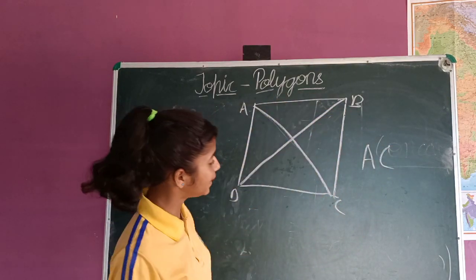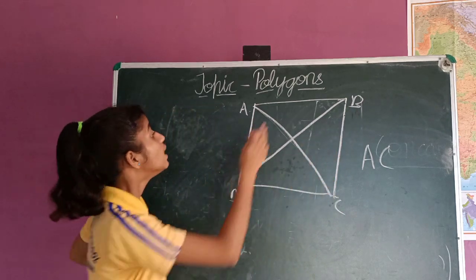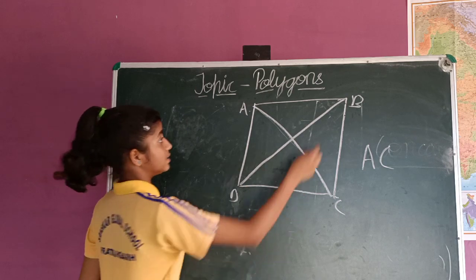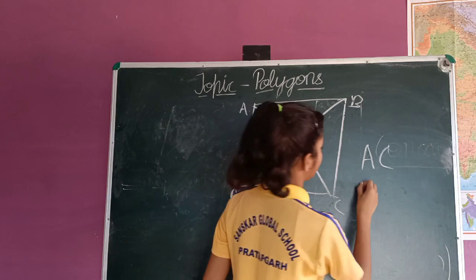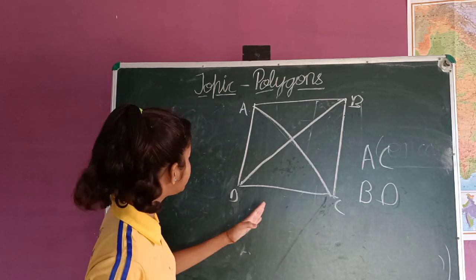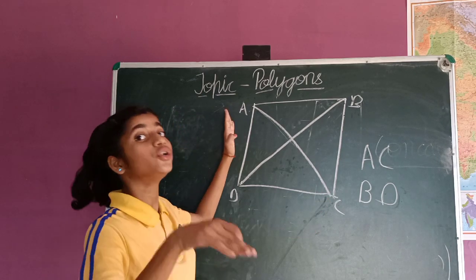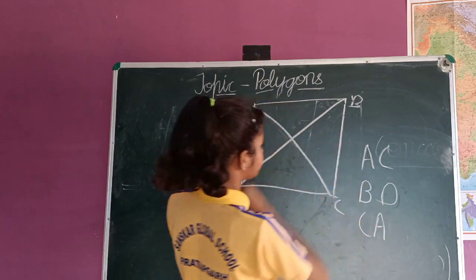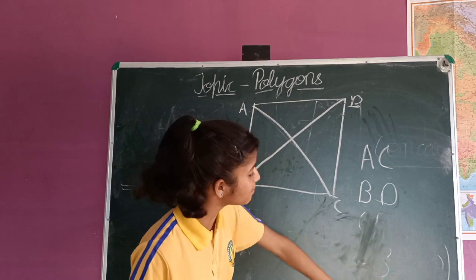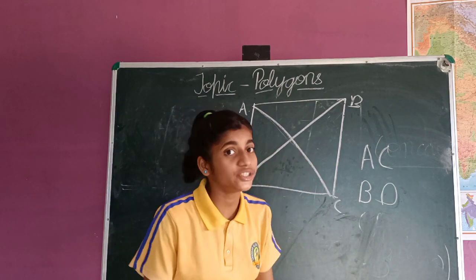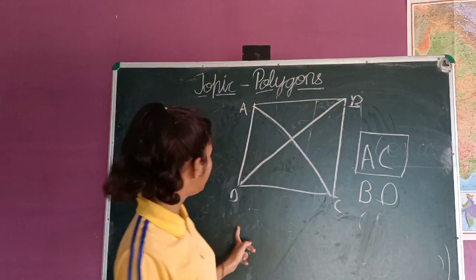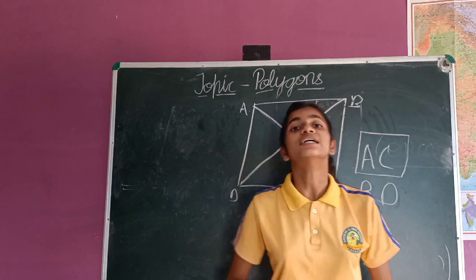Similarly, from vertex B, we skip C (a consecutive vertex) and join B to D, which gives diagonal BD. From vertex C, we skip D and join C to A, giving diagonal CA. So for this quadrilateral with vertices A, B, C, D, there are two diagonals: AC and BD. A quadrilateral has two diagonals because it has four sides.